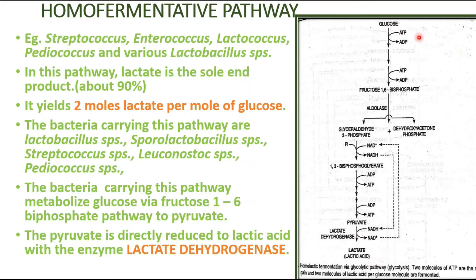In the homo-fermentative pathway, one mole of glucose gives rise to two molecules of lactate. As we know, in glycolysis we get two molecules of pyruvate, and from each pyruvate, lactate is produced directly in the presence of the enzyme lactate dehydrogenase. This process results in the synthesis of two molecules of ATP.